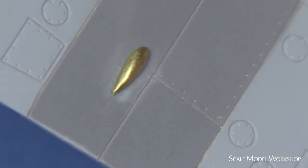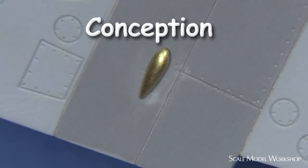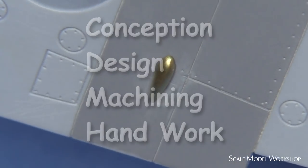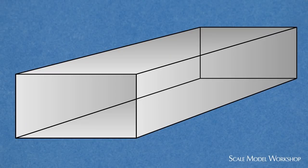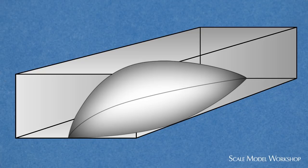Creating this small blister is an excellent example of how a part goes from conception, design, several machine processes, and finally handwork. The basic concept involves first establishing the outside dimensions, and then the removal of material to the desired shape.